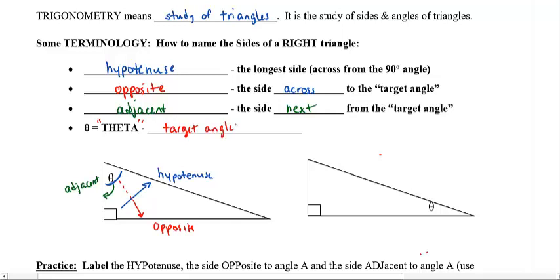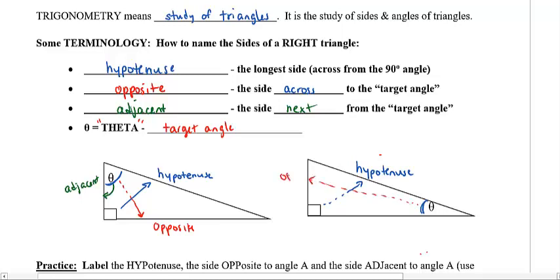Here's some practice for you. I want you to do the same thing with this other right triangle on the right-hand side. This time, I changed my target angle — it's now down here. I always like to label the hypotenuse first — that's the longest side, also the one across from the right angle. Then do the opposite side, since it's across from the target angle. And finally, the adjacent side — the leftover one next to the angle.